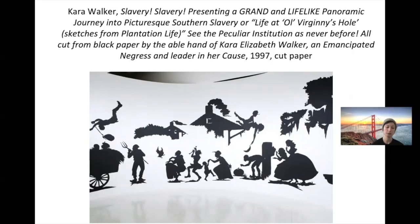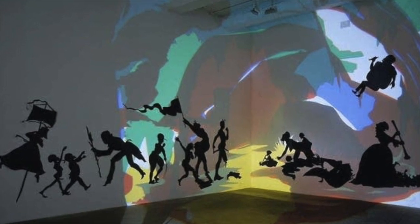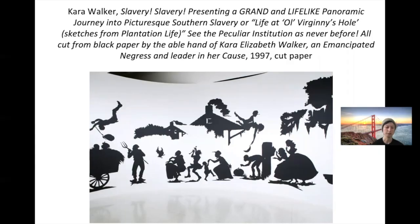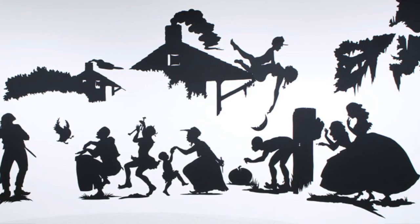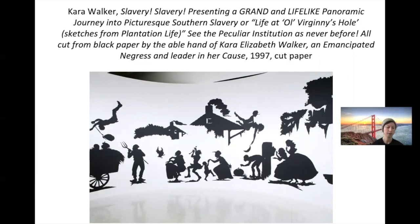Kara Walker is a contemporary American artist who makes use of both visual contrast and conceptual contrast to explore historical aspects of race, gender, sex, and violence. Walker cuts images from black paper and glues them directly onto the walls to create silhouette murals. The black paper on white walls provides stark visual contrast and is conceptual in subject matter as well.